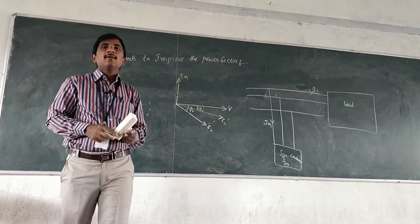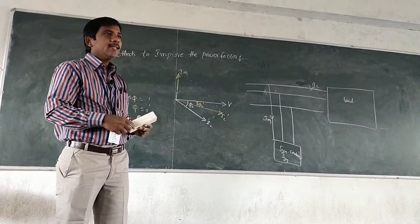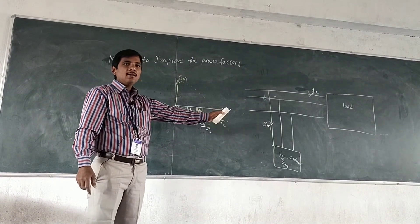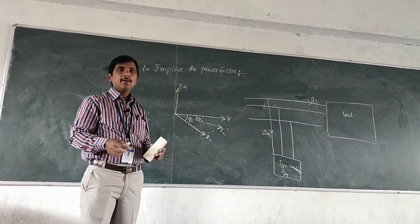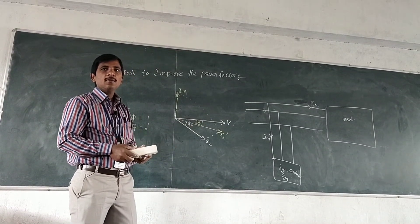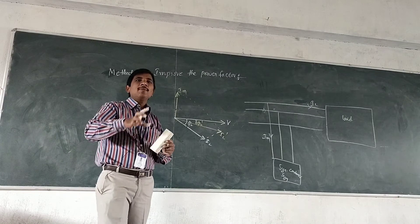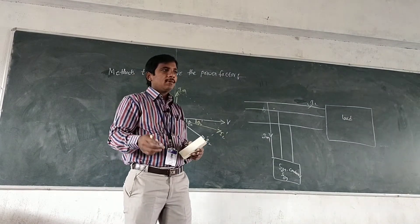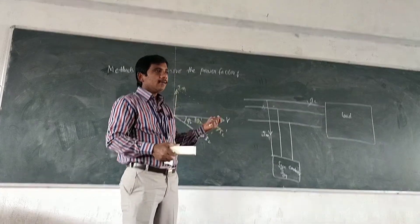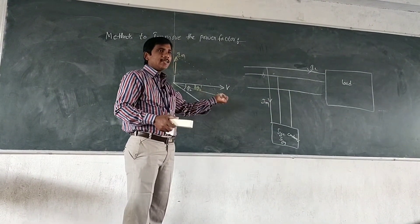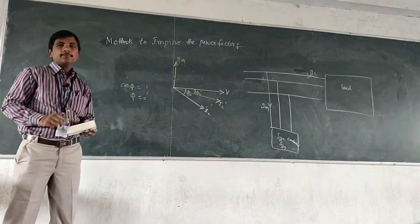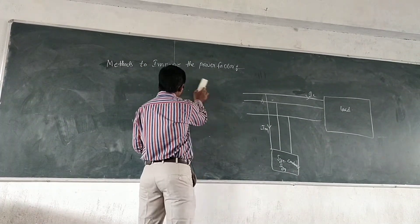The synchronous condenser is similar to a static capacitor. A synchronous motor when over-excited and running at no load acts as a static capacitor — a synchronous condenser. By increasing field excitation, the synchronous motor running without any load gives a leading current and acts as a capacitor — a synchronous condenser.